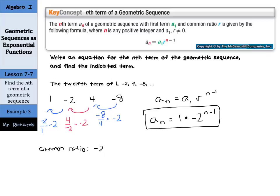Now let's use that to find the twelfth term. a_12, representing the twelfth term, is going to equal 1 times -2 to the 12 minus 1 power. That equals 1 times -2 to the eleventh power. -2 to the eleventh power is -2,048. And 1 times that is -2,048. So the twelfth term is -2,048.